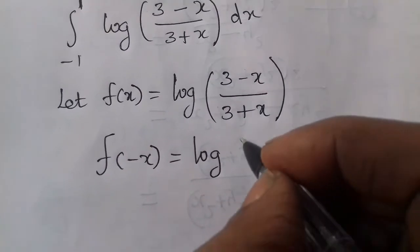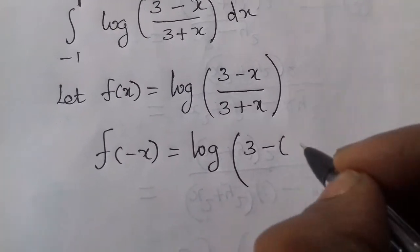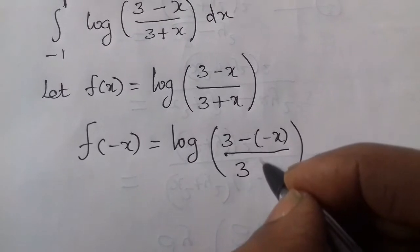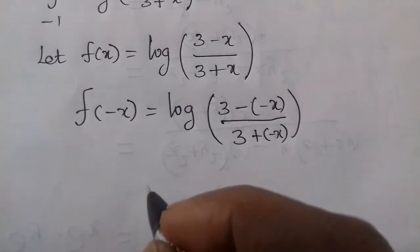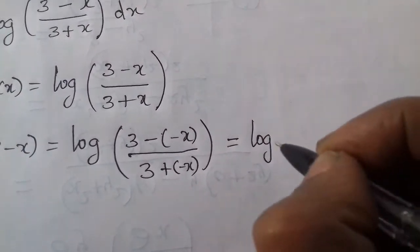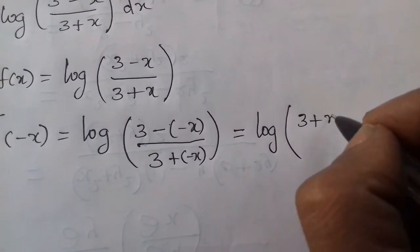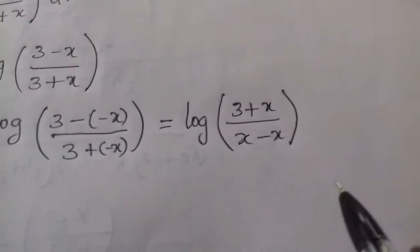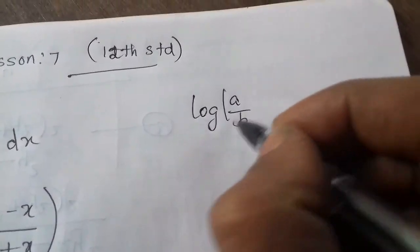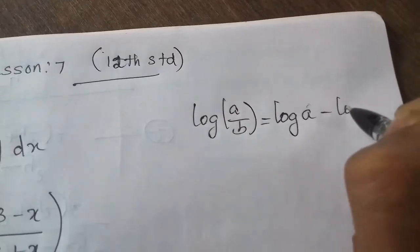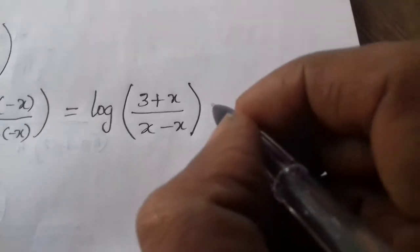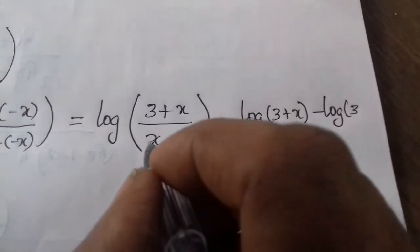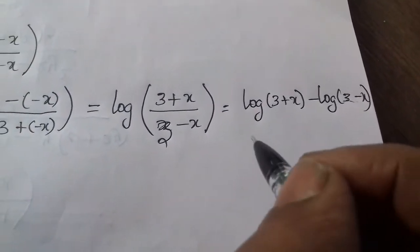f(minus x) equals log of (3 minus (minus x)) divided by (3 plus (minus x)), which simplifies to log of (3 plus x) divided by (3 minus x). Using the formula log(a/b) equals log a minus log b, this becomes log(3 plus x) minus log(3 minus x).